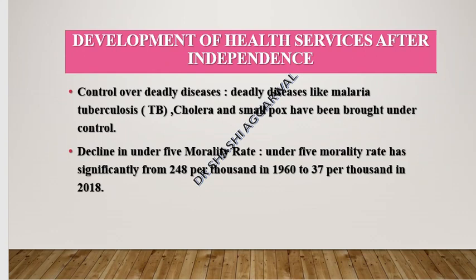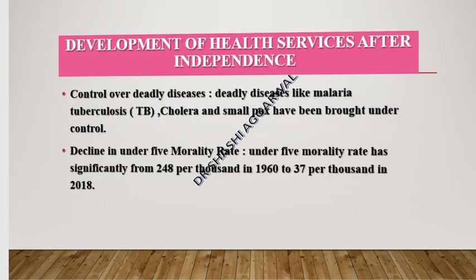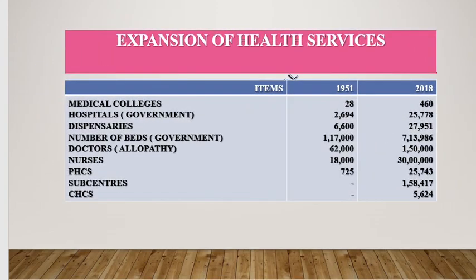In 1960, the infant mortality rate was 48 per thousand, declining to 37 per thousand later. Looking at healthcare infrastructure growth: medical colleges increased from 28 to 460; government hospitals grew from 2,694 to 25,778; dispensaries went from 6,600 to 27,951; government beds rose from 1,01,17,000 to 7,13,986; the number of nurses increased from 18,000 to 30,000; and primary health care centers grew from 725 to 25,743, with all sub-centers reaching 1,48,417.